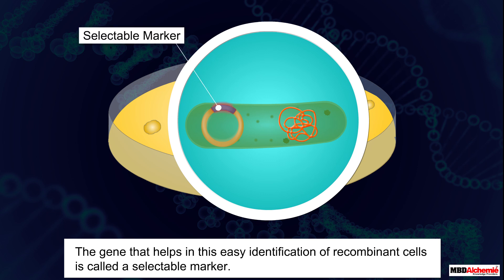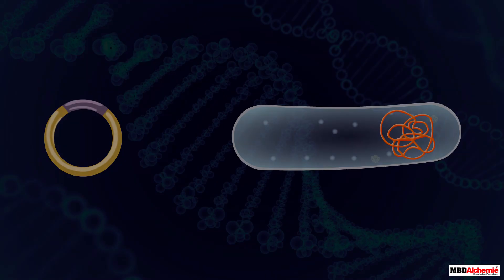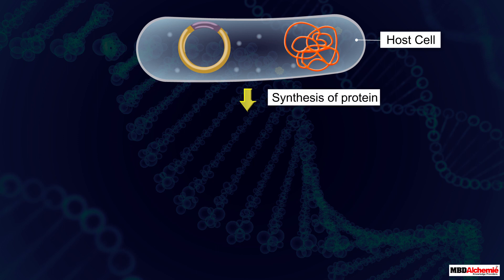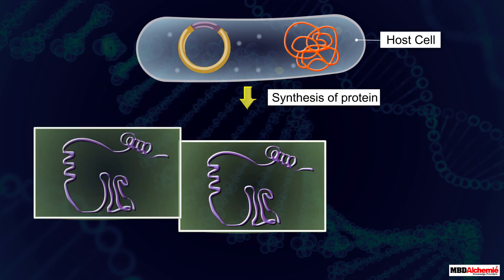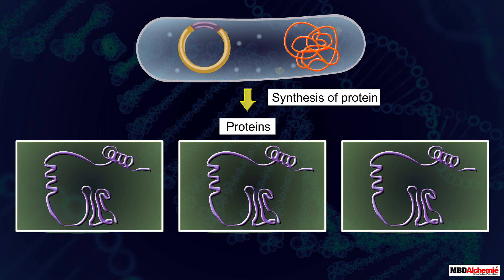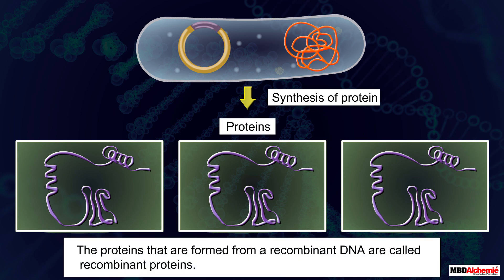Now once the gene is inserted in the host cell, it starts expressing itself in the host cell to synthesize the desired protein. Such proteins that are formed from a recombinant DNA are called recombinant proteins.